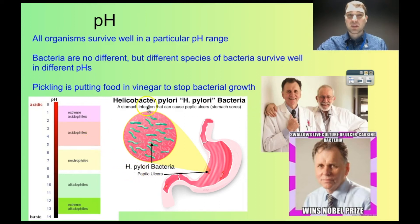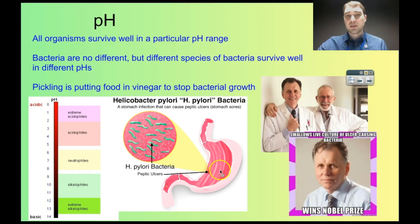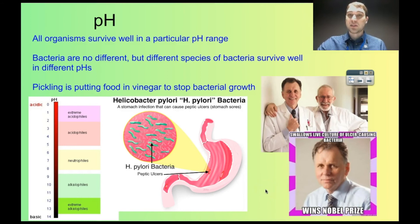One of the most famous bacteria that can survive in acidic situations is Helicobacter pylori, which was worked on by two Australian scientists — Dr. Barry Marshall and Dr. Robin Warren. What they discovered is that this bacteria, found in stomach contents where it's very acidic, causes stomach ulcers — burns and lesions on the inside of your stomach wall. Dr. Barry Marshall swallowed a mixture containing Helicobacter pylori and developed stomach ulcers very quickly. He then took antibiotics which healed the bacteria and his ulcers disappeared. They won the Nobel Prize in 2005 for Physiology and Medicine for their discovery.